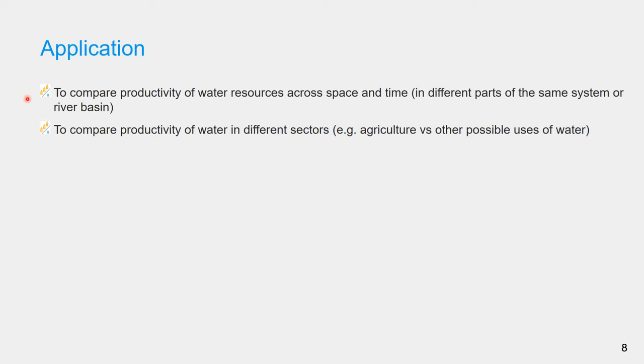It can be used to compare productivity of water resources across space and time, that is, in different parts of the same system or in a river basin. It can be used to compare productivity of water in different sectors, example agriculture versus other possible use of water, such as industry.